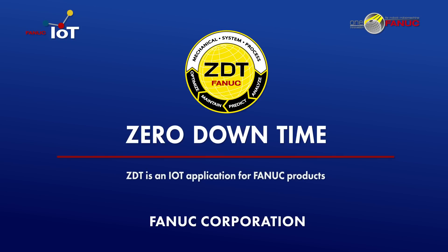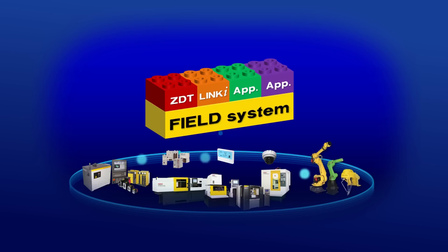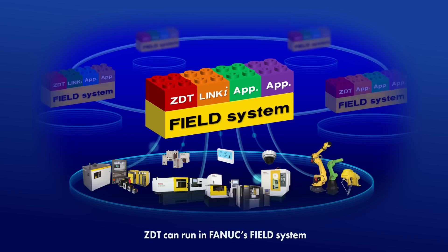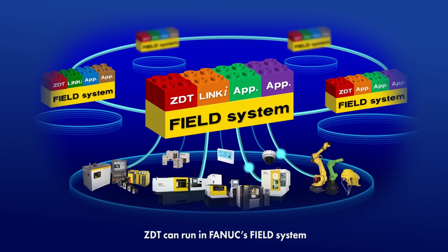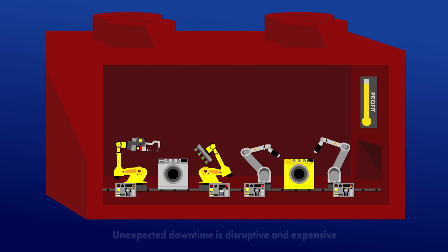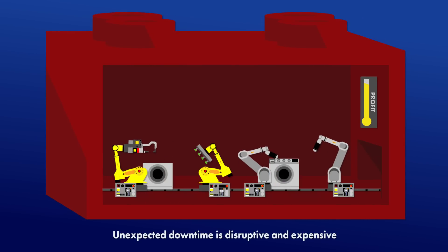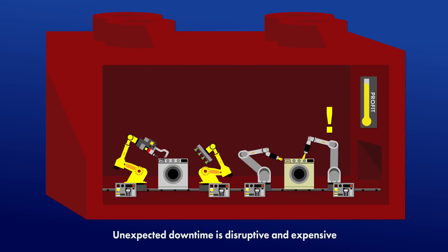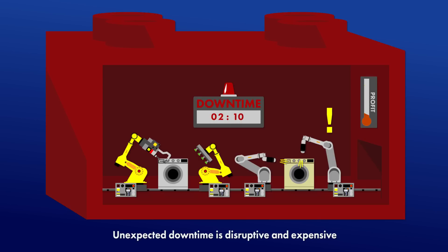Zero Downtime, or ZDT, is an IoT application for FANUC products that can run in FANUC's Field System. FANUC's Field System is an open platform that enables access to vast amounts of data from equipment on the factory floor. Manufacturers are running factories 24-7 and any unexpected downtime is disruptive and expensive.